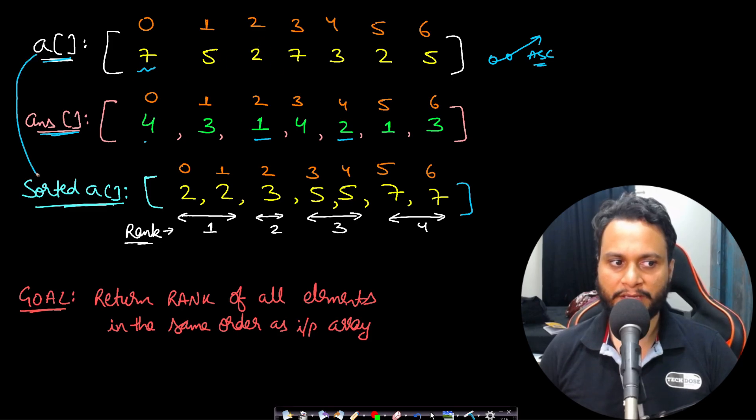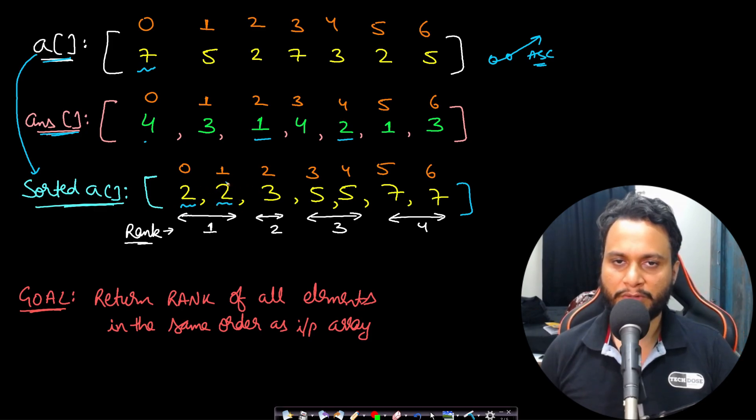If you had sorted this A and formed a sorted array, then 2 would be the first item, second item would also be 2, but then they are the same items. So according to the problem statement, only unique items will get different rank.